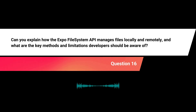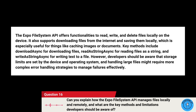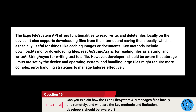Can you explain how the Expo File System API manages files locally and remotely, and what are the key methods and limitations developers should be aware of? The Expo File System API offers functionalities to read, write, and delete files locally on the device. It also supports downloading files from the internet and saving them locally, which is useful for caching images or documents. Key methods include downloadAsync for downloading files, readAsStringAsync for reading files as a string, and writeAsStringAsync for writing text to a file. Developers should be aware that storage limits are set by the device and OS, and handling large files may require more complex error handling strategies.